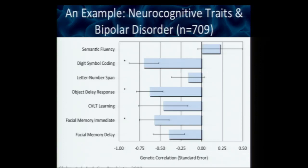What's an example endophenotype? We took 709 individuals from families that had two siblings with bipolar disorder and gave them all neurocognitive measures. We wanted to ask one simple question: what neurocognitive measures seem to be genetically correlated with bipolar disorder? We came out with three measures — a digit symbol coding task (a processing speed measure), an object delay response task (a working memory measure), and a facial memory measure (a declarative, longer-term memory measure). The closer you are genetically to an individual with bipolar disorder, the worse you perform, which suggests pleiotropy between bipolar disorder and performance on these measures.